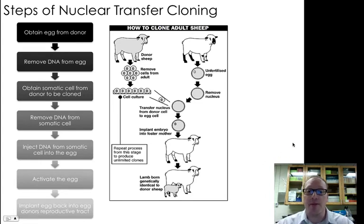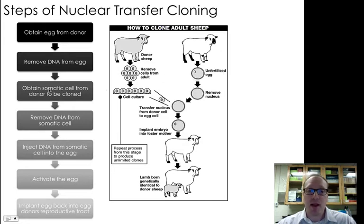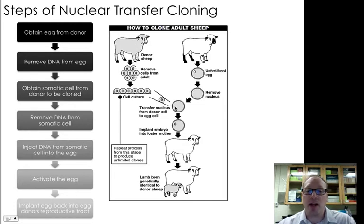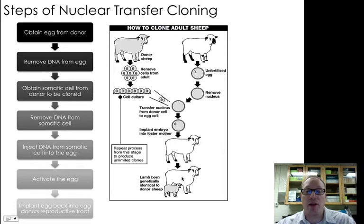If we're going to do nuclear transfer cloning, here are the steps. You obtain an egg from a donor sheep and remove the DNA from that egg. Then you get a somatic cell from the organism to be cloned — some skin cells from a particular donor sheep. You take the DNA out of that somatic cell, put it into the egg cell that's had its DNA removed, and activate it with a jolt of electricity. Then you take that developing embryo and put it back into the reproductive tract — namely the uterus — of an organism that's going to carry it to term. The lamb that's born is genetically identical to the donor sheep, not necessarily looking like the sheep that carried it.